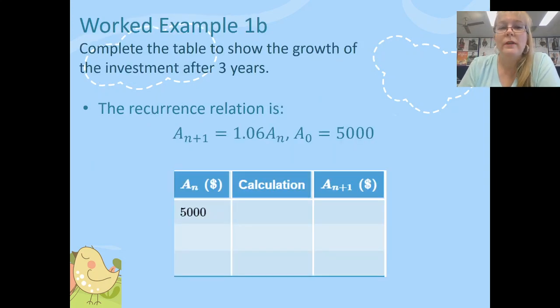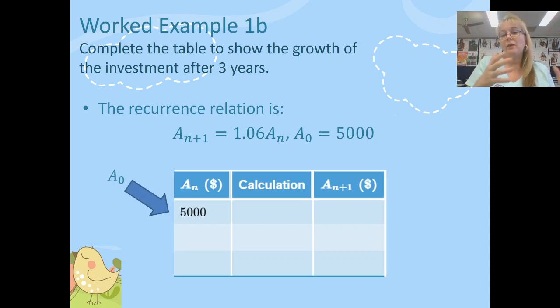The next part of our question asks us to complete a table to show the growth of the investment after three years. So we're simply using this recurrence relation starting at A_0 and we're going to be building the compound interest onto that year after year after year. We're going to do that for three different rows. So if I use my formula 1.06, now we're starting at A_0. We're going to multiply that by 5,000 and we get our amount at A_0 plus 1 which is the amount at the end of the first year and that's going to be $5,300. That's A_1.